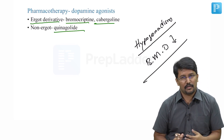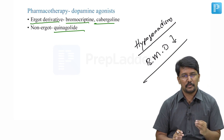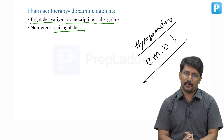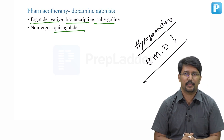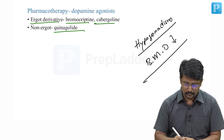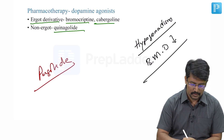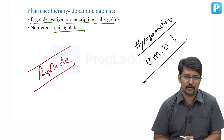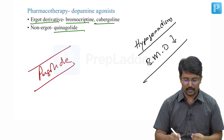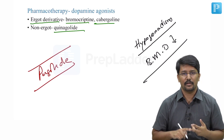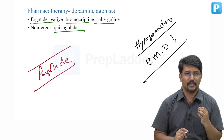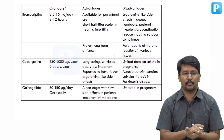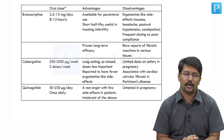In a recent exam, there was a question asking which dopamine agonist is not used for treatment of hyperprolactinemia or prolactinoma. One of the options was pergolide, which is not effective in treating hyperprolactinemia. So the three important effective drugs are bromocriptine, cabergoline, and quinagolide. Pergolide is not effective. All three — bromocriptine, cabergoline, and quinagolide — are dopamine agonists.